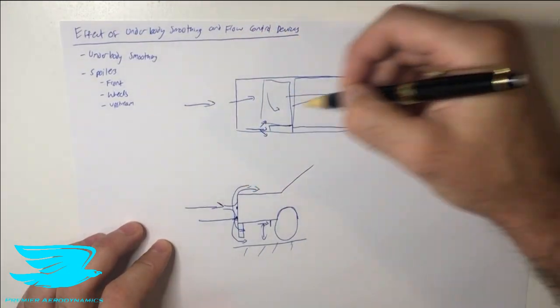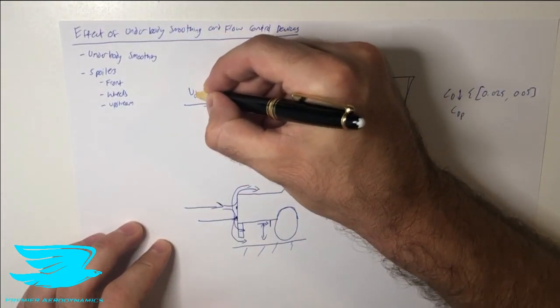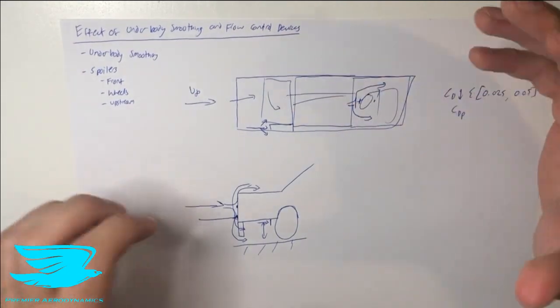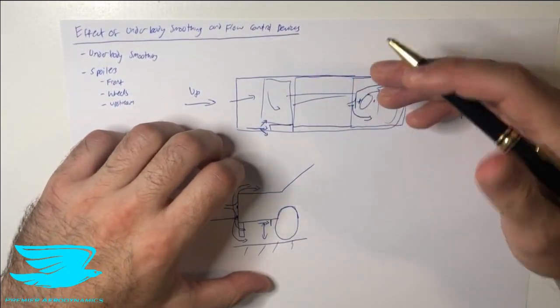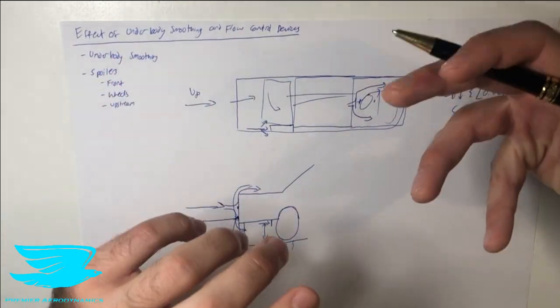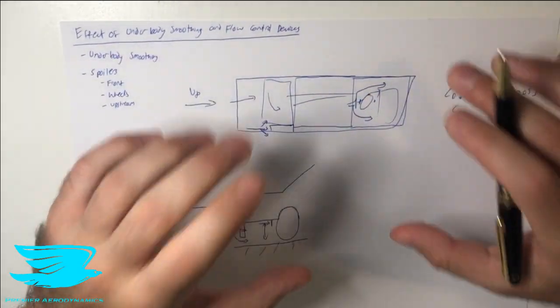We have the underbody of a car, the flow is coming in here, and we have all these different components on the underbody. They're often exposed. That means that the flow comes in, hits them, and it's going to separate. It's going to increase the friction drag, pressure drag, and that's not good for the car.